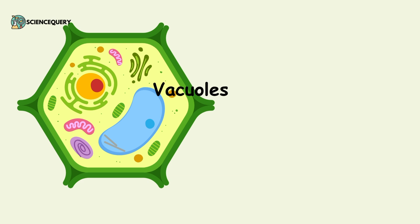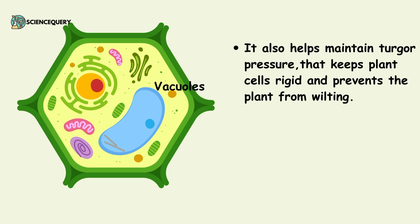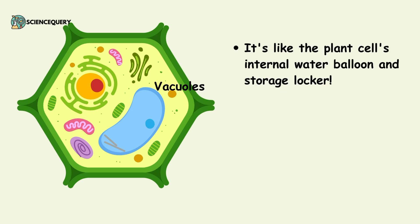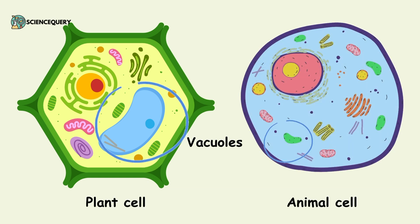Vacuoles are another important organelle of eukaryotic cells, especially plant cells. A vacuole stores water, nutrients and waste products. It also helps in maintaining turgor pressure, which keeps the plant cell rigid and prevents the plant from wilting — it's like the plant cell's internal water balloon and storage locker. Vacuoles in plant cells are bigger in size, whereas vacuoles in animal cells are smaller.